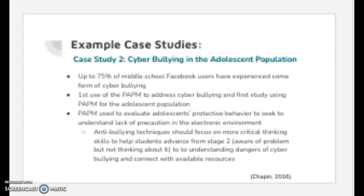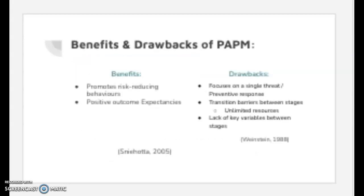As a real-world example, a crisis-centered North Prevention Education program integrated optimistic bias into their curriculum and noted short- and long-term reduction in perception bias. Some of the benefits of PMPM include the ability to promote risk-reducing behaviors whereby people take precautionary action to reduce perceived risk, and positive outcome expectancies which increase as an individual moves up through the stages of the model.